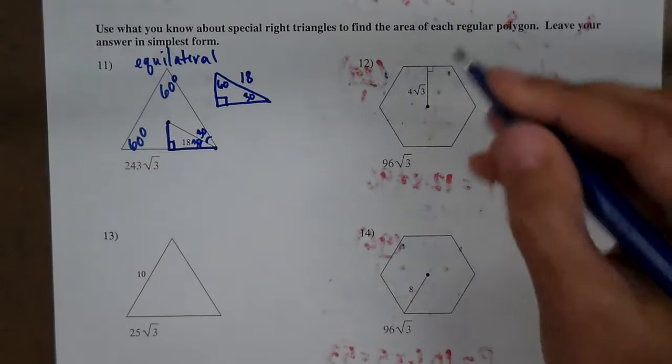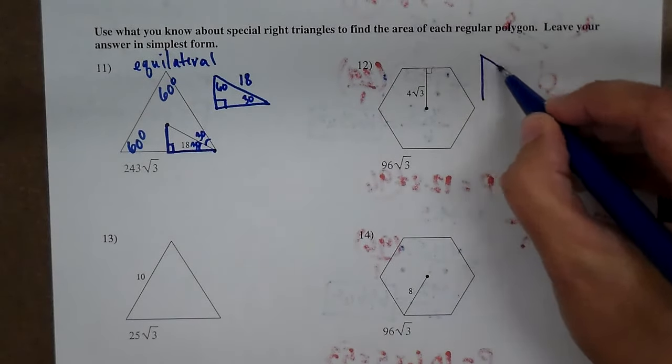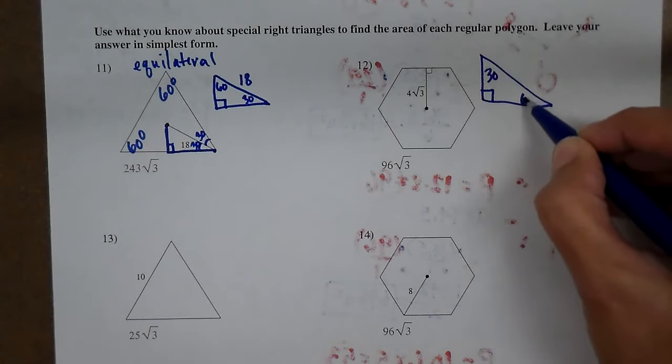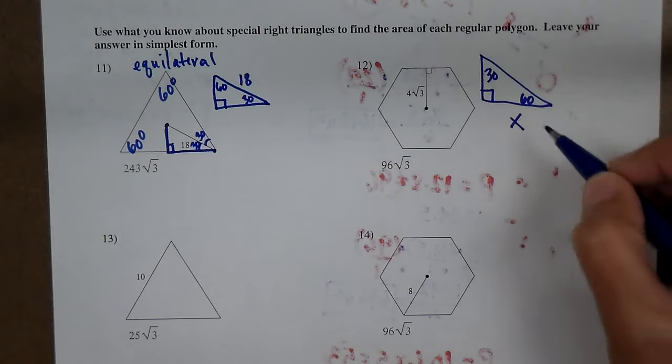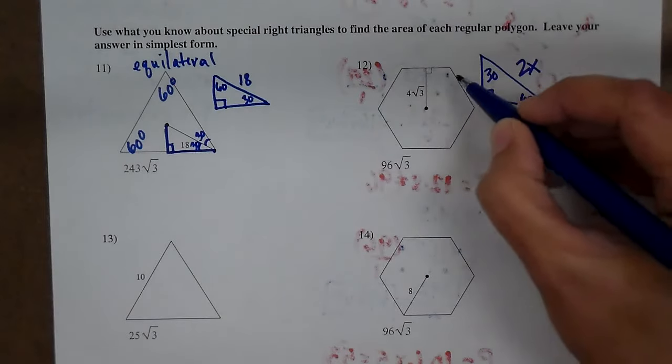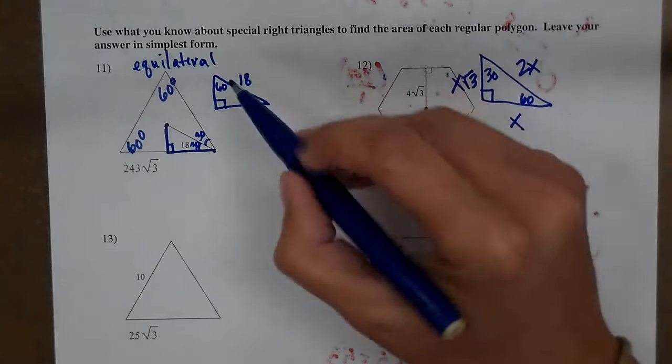If you remember the ratio in a 30-60-90 triangle, the smallest side across from the 30 is x. The hypotenuse is twice as big as x, and the side across from the 60 is x times the square root of 3.